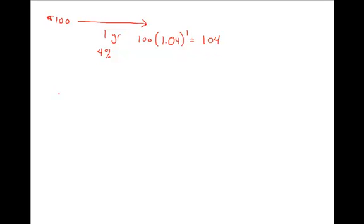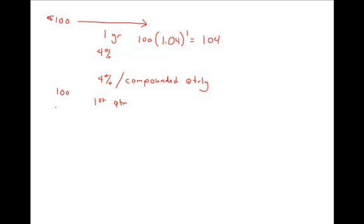But if I have $100 that I put into an account that pays 4% annually but it's compounded quarterly — they would phrase it that way. Then instead of getting 4% a year, I receive 1% a quarter. So $100 would stay in the account for the first quarter, and I'd earn 1%. So 100 times 1 plus 1% is $101.